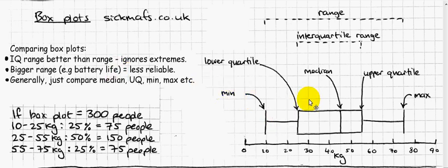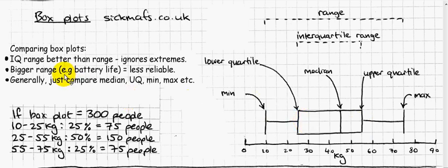What you often have to do is compare two box plots. When comparing two box plots, there are a few things you should bear in mind. First of all, the interquartile range is a better way to compare two box plots than the normal range, which is the difference between minimum and maximum.